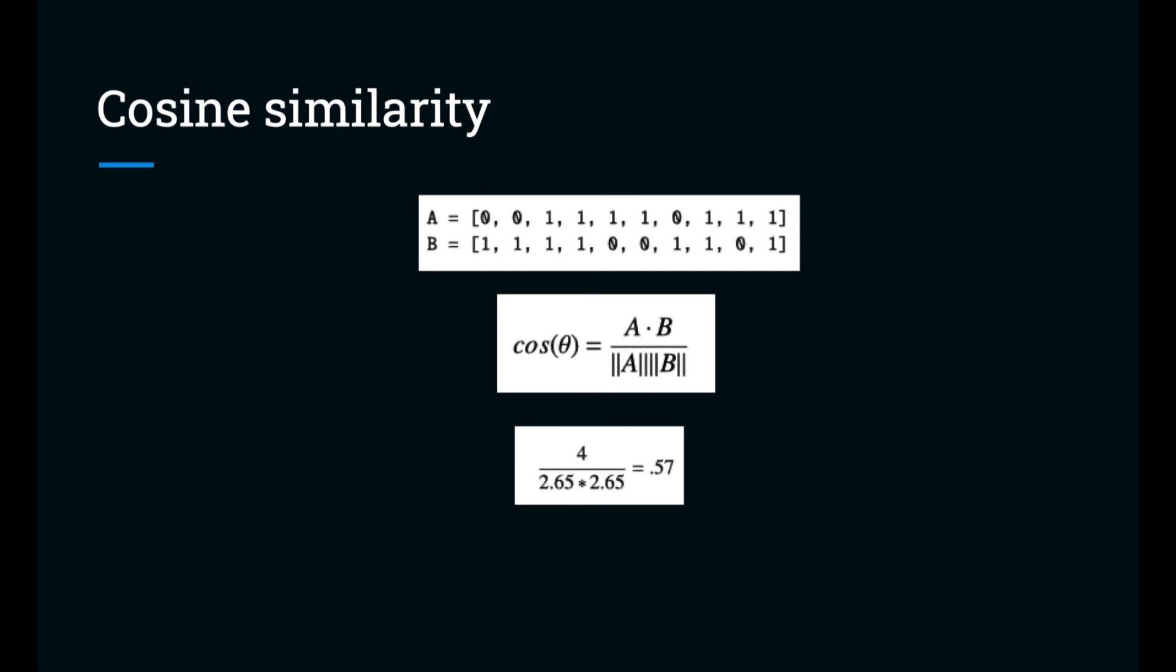That will actually depend on the corpus and the task. One approach would be to randomly sample documents and compute cosine similarity, and then finding an average. Anything above that average would be considered fairly similar. Another approach could be to select some threshold like 0.75. And that optimal threshold will depend on the application. Should it err towards finding too many or too few similar documents.